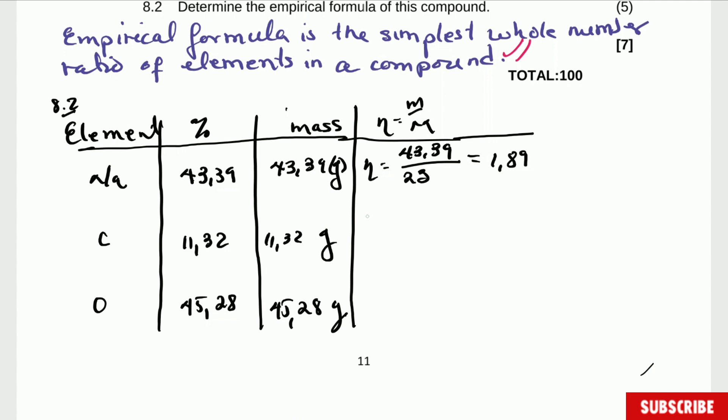Alright we are going to repeat this one for carbon, number of moles is equal to 11.32 divided by the mass of carbon is 12 and we get 0.94. This is mole, this is mole.